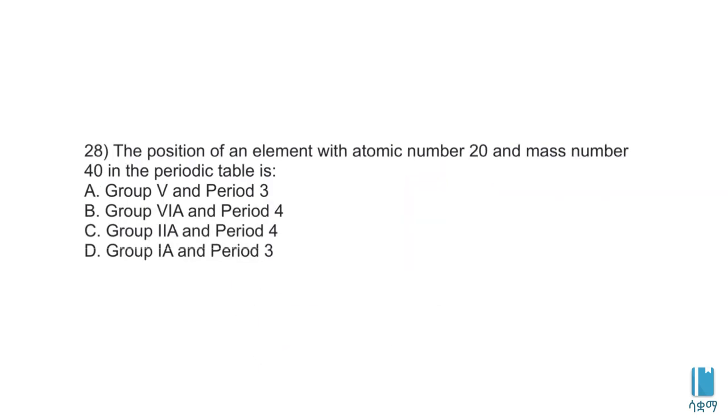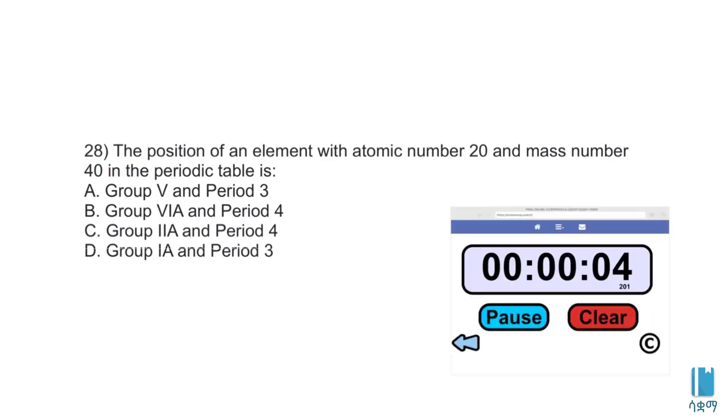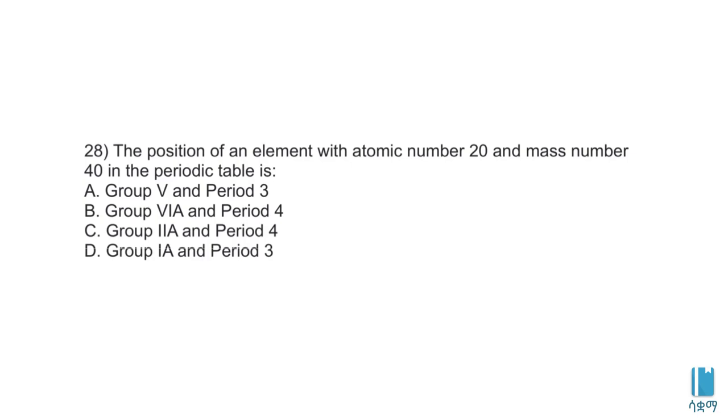The position of an element with atomic number 20 and mass number 40 in the periodic table. We need to find the group and period. Let's write the electron configuration for this element with atomic number 20.